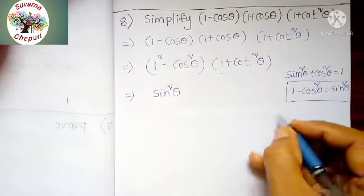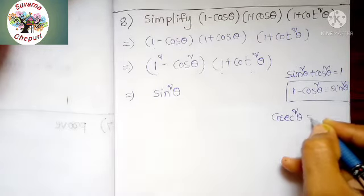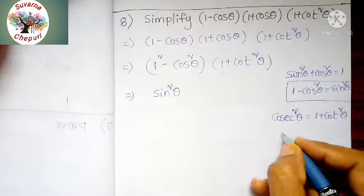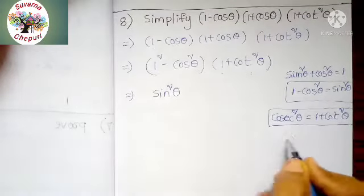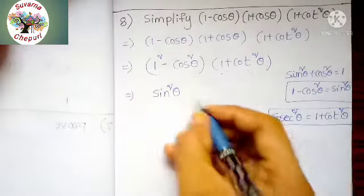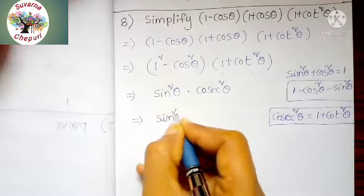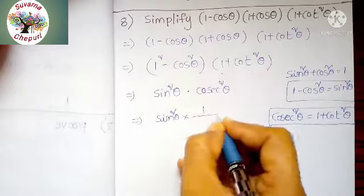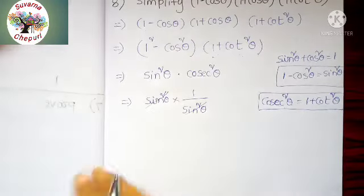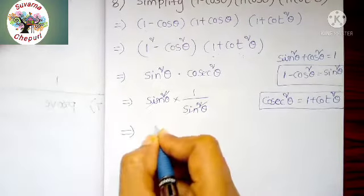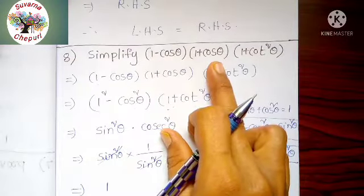Next, 1 plus cos squared theta: by using trigonometry identities, cosecant squared theta equals 1 plus cot squared theta. So 1 plus cot squared theta means cosecant squared theta. Applying these two formulas: sin squared theta into cosecant squared theta, which is 1 by sin squared theta. Sin squared theta and sin squared theta get cancelled. Finally, the answer is 1.